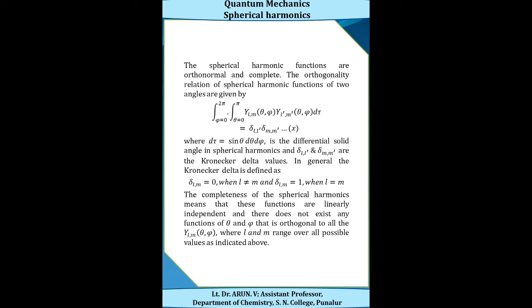The Kronecker delta is defined as δ_{lm} = 0 when l ≠ m, and δ_{lm} = 1 when l = m. The completeness of the spherical harmonics means that these functions are linearly independent and there does not exist any function of θ and φ that is orthogonal to all spherical harmonics Y_l^m(θ,φ), where l and m range over all possible values.